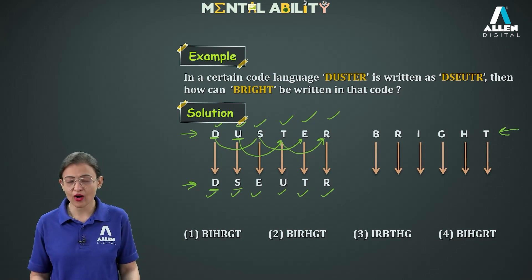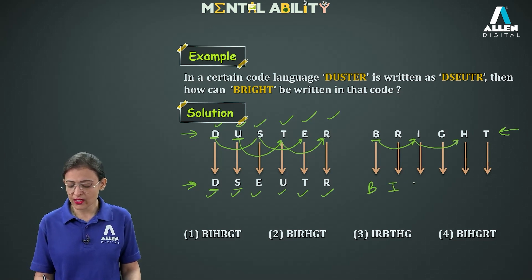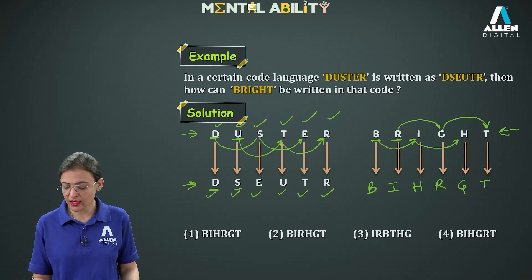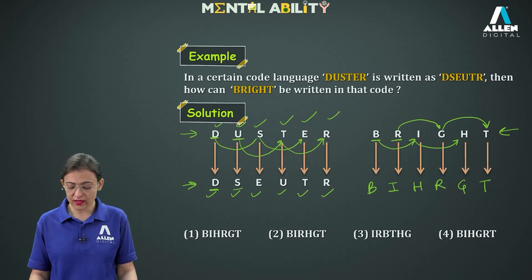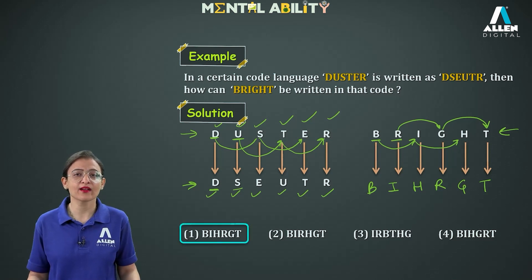We apply the same reordering pattern to BRIGHT. Starting with the first letter B, leaving one letter moving to I, leaving one letter moving to H. Then coming to the second letter R, leaving one letter moving to G, leaving one letter moving to T. So the required code is B, I, H, R, G, T and the first option is correct.